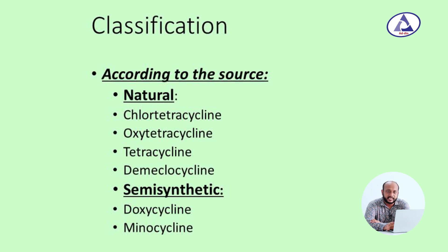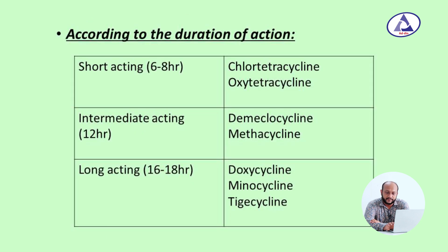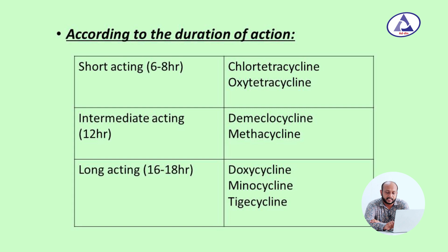Semi-synthetic tetracyclines are doxycycline and minocycline. According to duration of action, the drugs can be classified into short-acting, intermediate-acting, and long-acting. Short-acting examples are chlorotetracycline and oxytetracycline; intermediate-acting are demeclocycline and methacycline; long-acting are doxycycline, minocycline, and tigecycline.